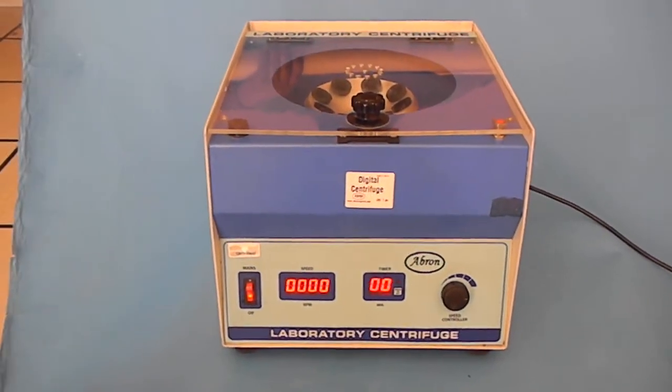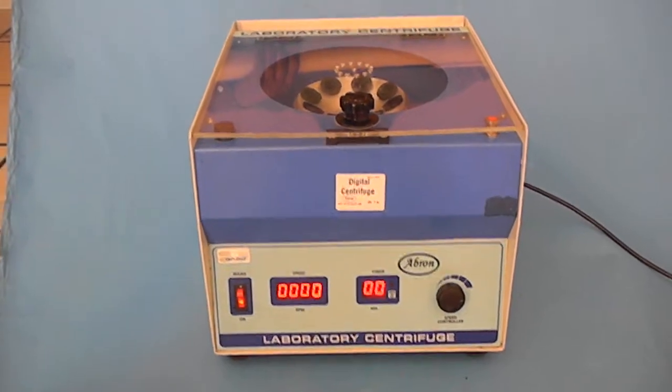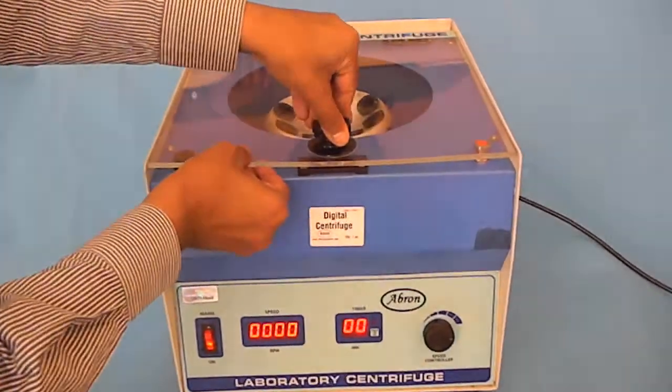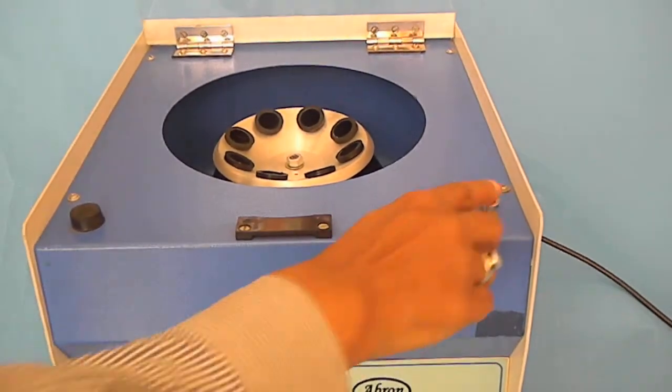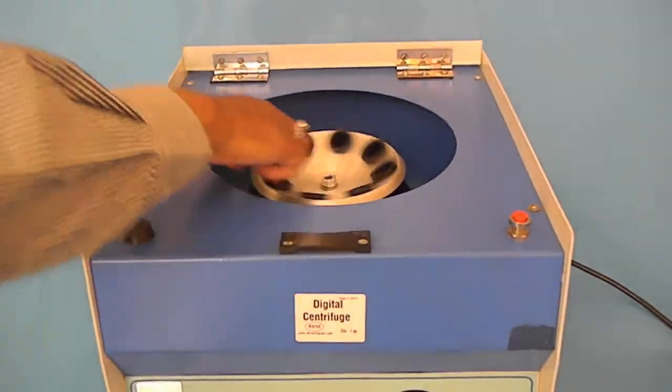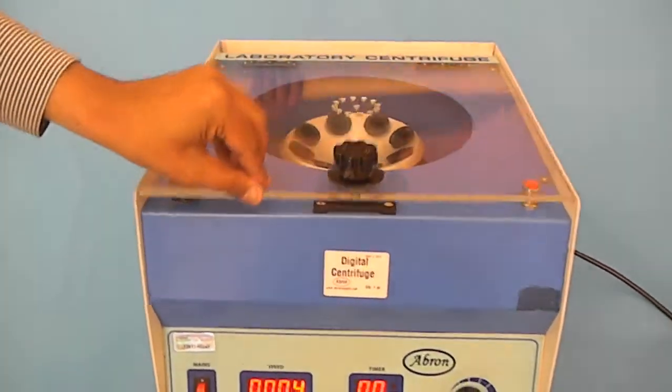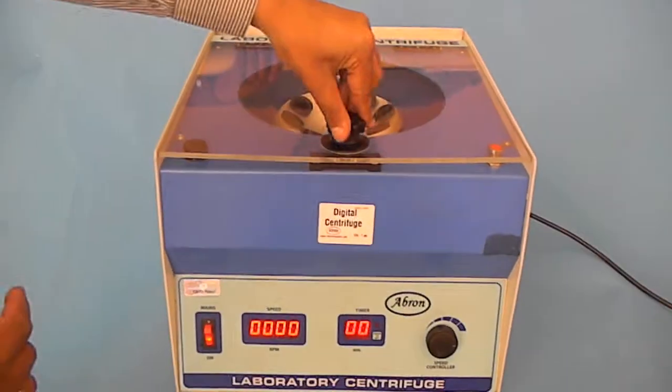This is the digital centrifuge machine with a top lid. It rotates and opens. There is a micro switch on the right side that automatically locks when you put the lid down.